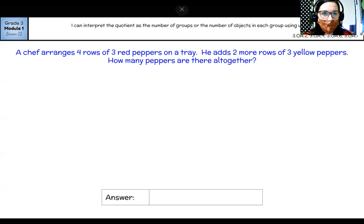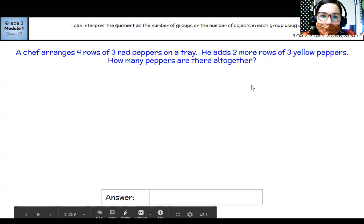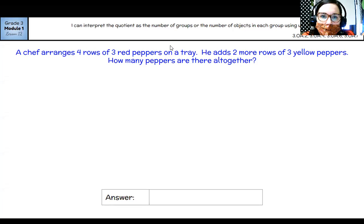Okay. So a chef arranges four rows of three red peppers on a tray. He adds two more rows of three yellow peppers. How many peppers are there all together? All right. So I'm going to use my stamps for this one. Four rows of three red peppers. One, two, three, four, with three in each.